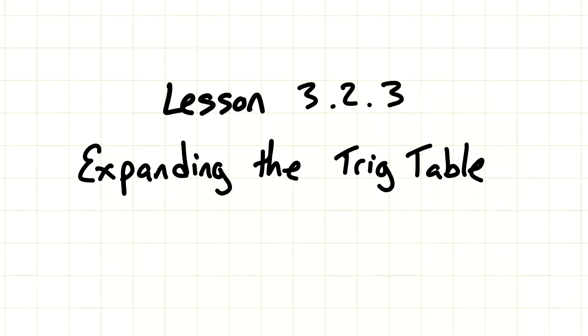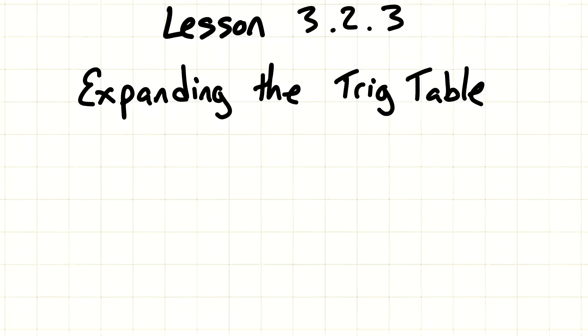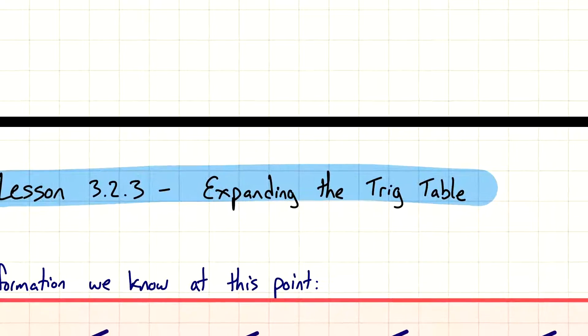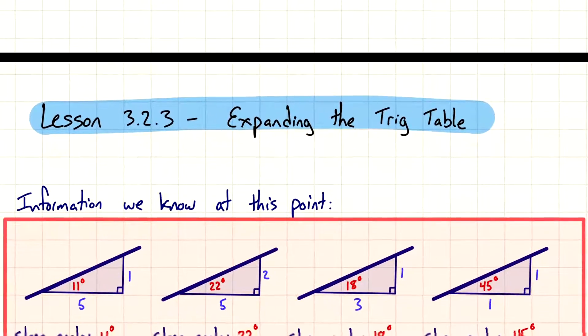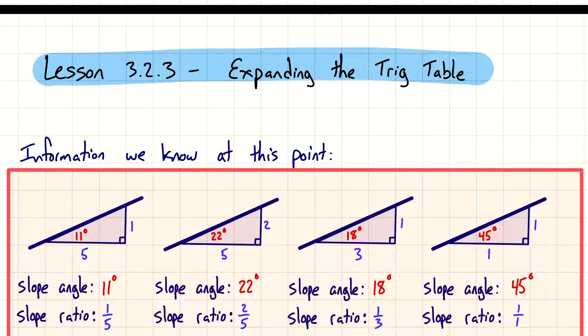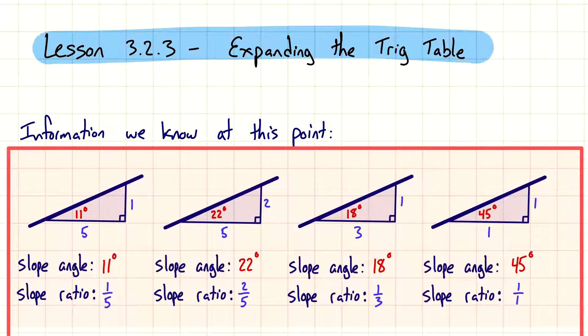Hi, this is Lesson 3.2.3, Expanding the Trig Table. This is a continuation of the last lesson where we were learning a little bit more about angles, slopes, and slope angles or slope ratios.